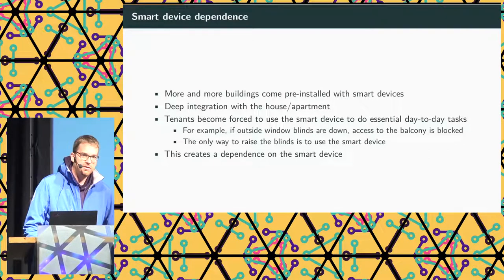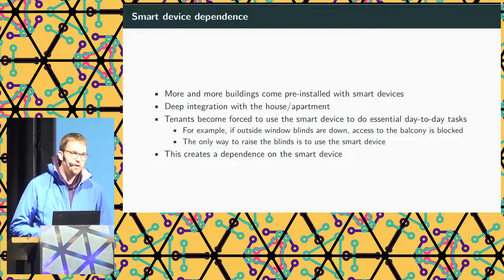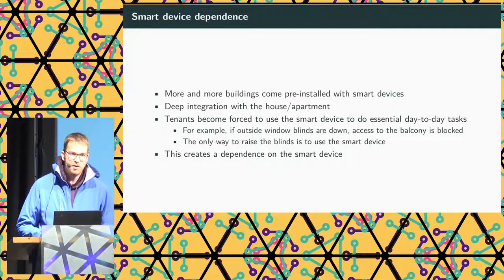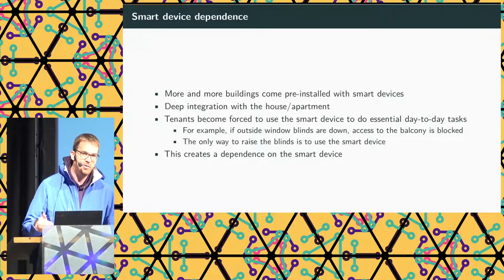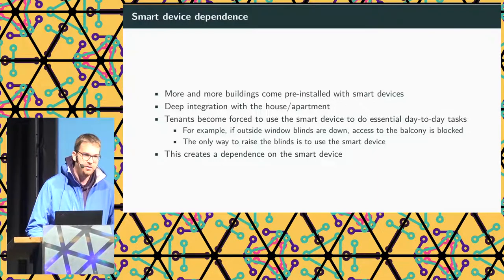More and more buildings come pre-installed with such smart devices, and they have very deep integration into the house or apartment. Tenants who rent the apartment become dependent on these devices because they really have to use them for day-to-day tasks. For example, if you have a balcony with blinds on the outside of the windows and the blinds are down, you cannot get out on the balcony. The only way is to turn the blinds up using that tablet — there's no manual knob or anything. This really creates a dependence on the smart device.